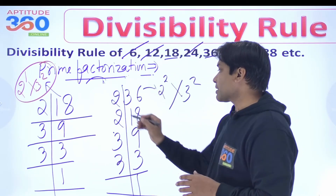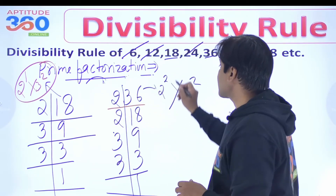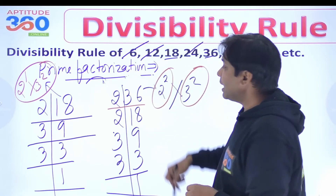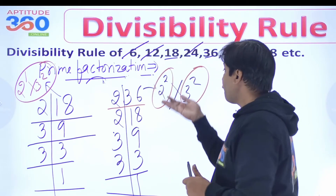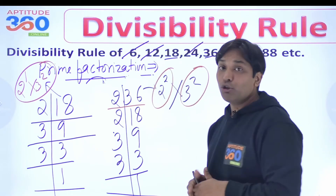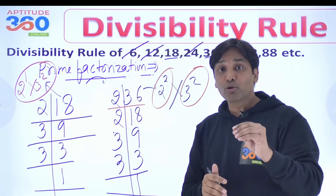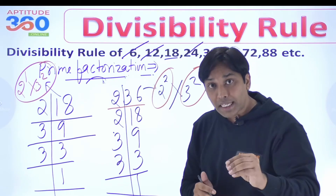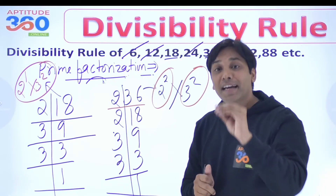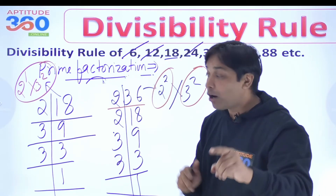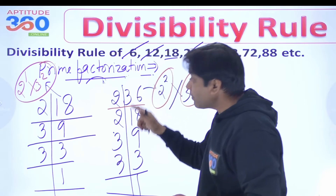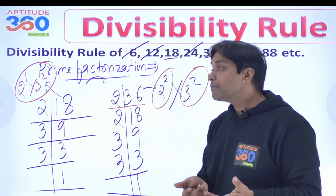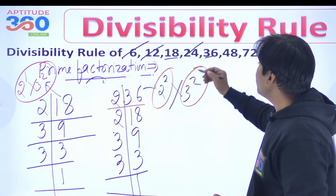How about 36? 36 comes out as 2 to the power 2 times 3 to the power 2, which gives us 4 and 9. You know the divisibility rule of 4 and the divisibility rule of 9. Hence you know the divisibility rule of 36 — as simple as that.